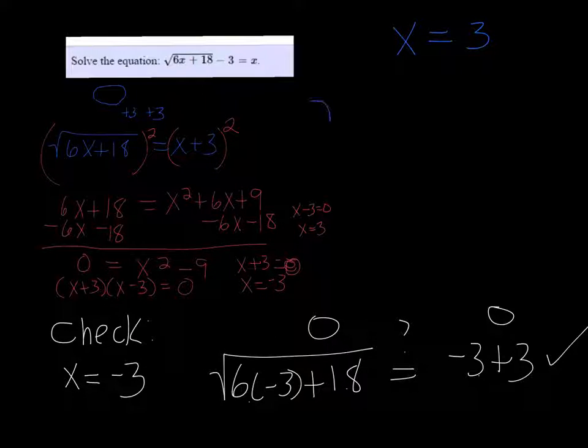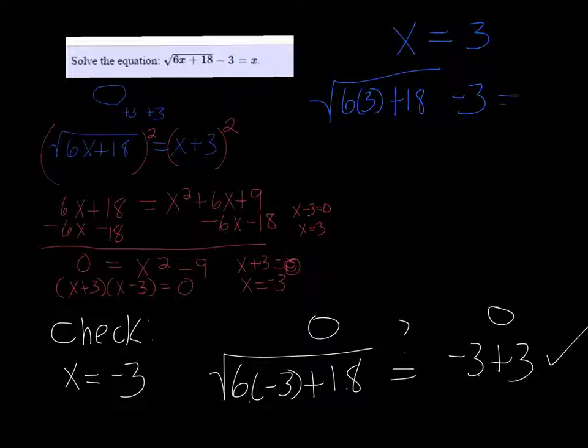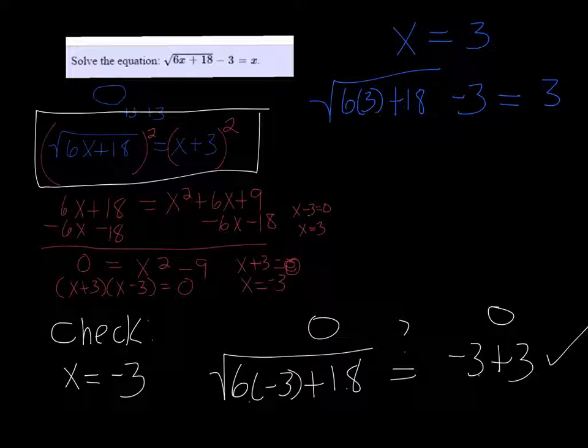It's going to be the square root of 6 times 3 plus 18 minus 3 equals positive 3. In the first check, I used the modified version of the equation. But remember, as long as you do the same thing to both sides, it's still the same equation. Generally, you want to go back to the original one that you started with.